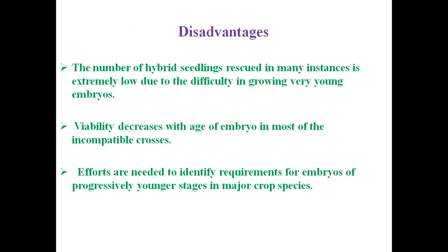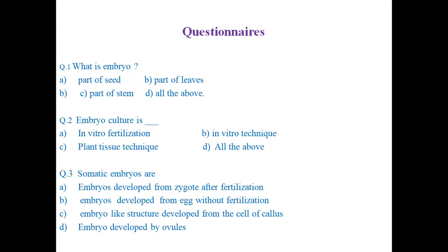Disadvantages of embryo culture: the number of hybrid seedlings rescued in many instances is extremely low, due to difficulty in growing very young embryos. Viability decreases with the age of embryo in most incompatible crosses. Efforts are needed to identify requirements for embryos at progressively younger stages in major crop species. Despite these disadvantages, embryo culture is very beneficial for the production of hybrid plants and many new varieties.